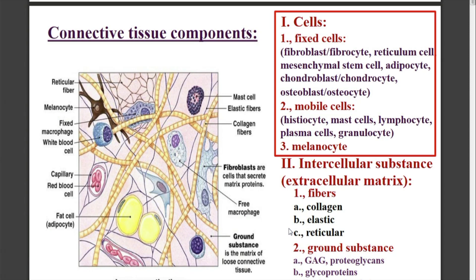Now I will show you the fixed connective tissue cells. These are the fibroblasts and fibrocytes as we saw before, reticulum cells — next week's material but I will show you now in the lymph node — mesenchymal stem cells. We cannot show them in our slides because it would need special techniques to demonstrate them, and the adipocytes. These are the cells of the connective tissue proper.